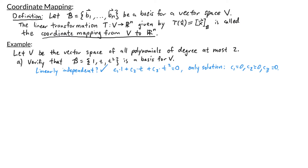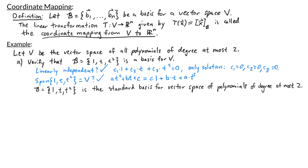Next, we need to check that the span of {1, t, t²} is all of V. If I have a polynomial of degree at most 2, it's of the form a·t² + b·t + c. Can I write that as a linear combination of 1, t, and t²? Yes — it's c times 1 plus b times t plus a times t². So since any such polynomial can be written this way, {1, t, t²} spans V. We've verified that b is indeed a basis for V. In fact, b is called the standard basis for polynomials of degree at most 2.